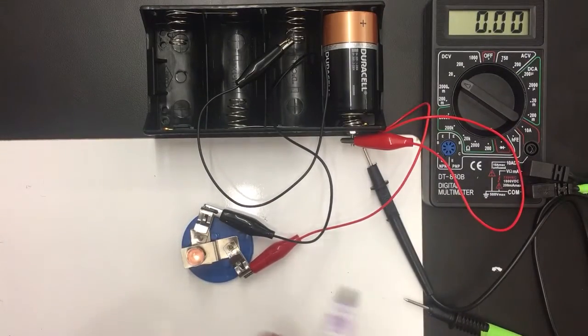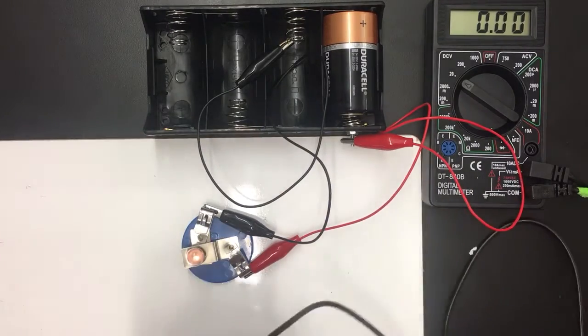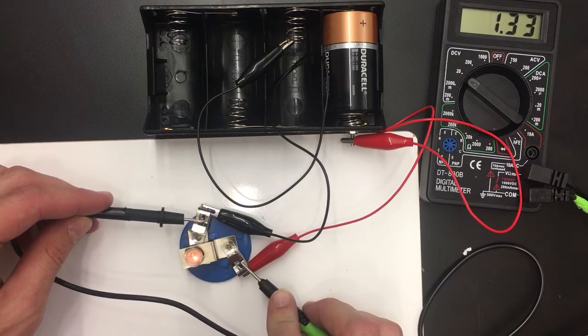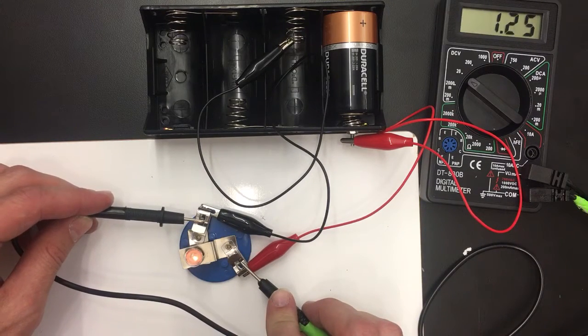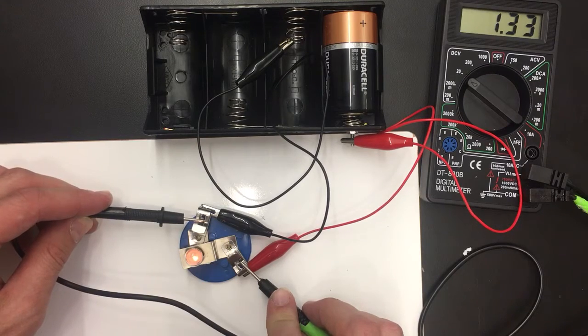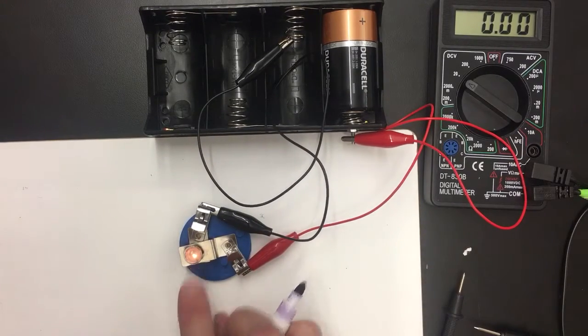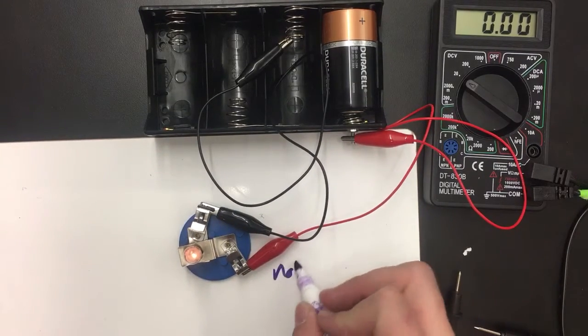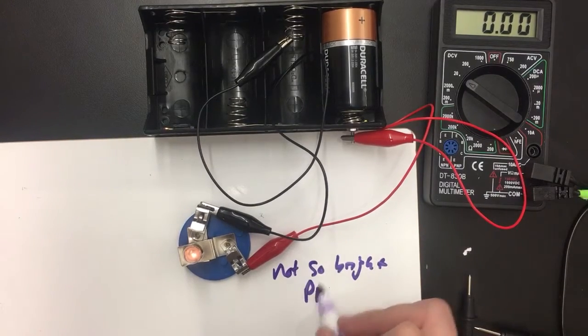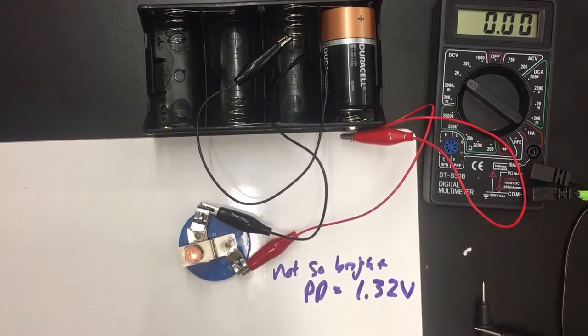I have here a bulb that's being lit by one battery, and if I connect this voltmeter across the two sides of the bulb, I can see the pressure difference across the bulb is 1.33 volts. So I can tell that this bulb is kind of bright, or not so bright, and the PD is 1.32 volts or so.